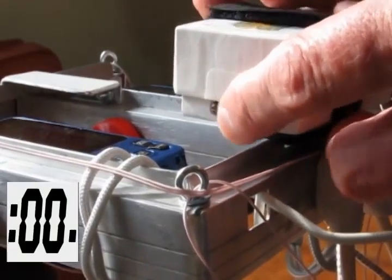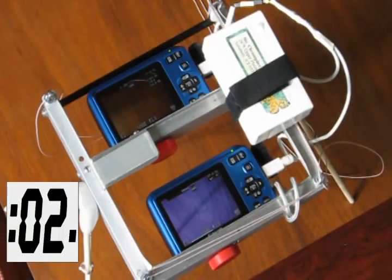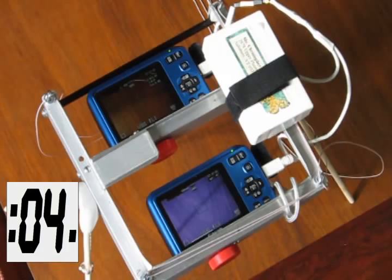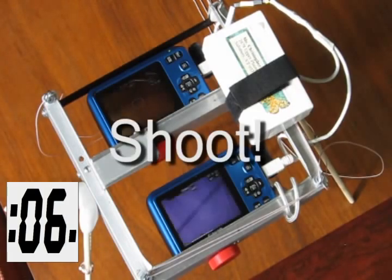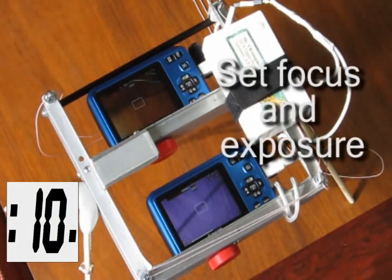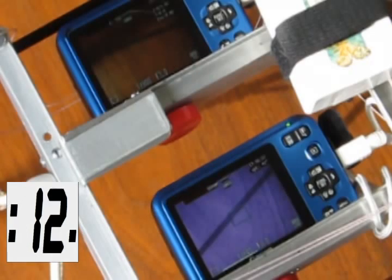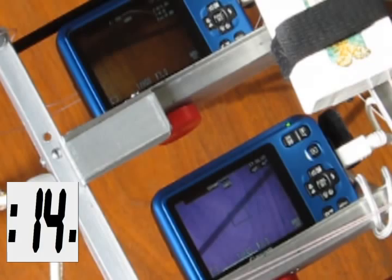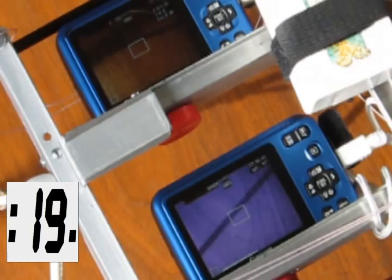The cameras are both on, so flipping the switch sends the first signal and the cameras prepare to shoot, like a half-press on some cameras. The timer is set to send a pulse every 5 seconds, and every other pulse, the cameras shoot. Ready for the next flight!